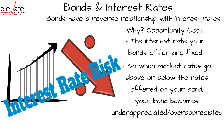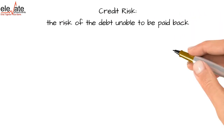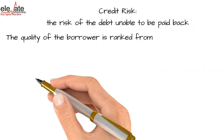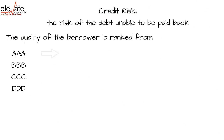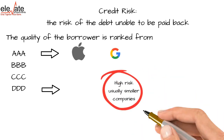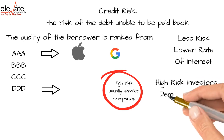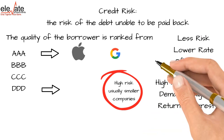Interest rate movements change the price of the bond but do not change the coupon payment, which is fixed. Another thing associated with bonds is credit risk. Because there is a lender and a borrower, not all borrowers are equal. Apple is a very low-risk borrower because it's a stable company, while a random startup needing money is higher risk. Stable borrowers offer lower interest rates because they're safer, while high-risk borrowers must offer more to entice investors.